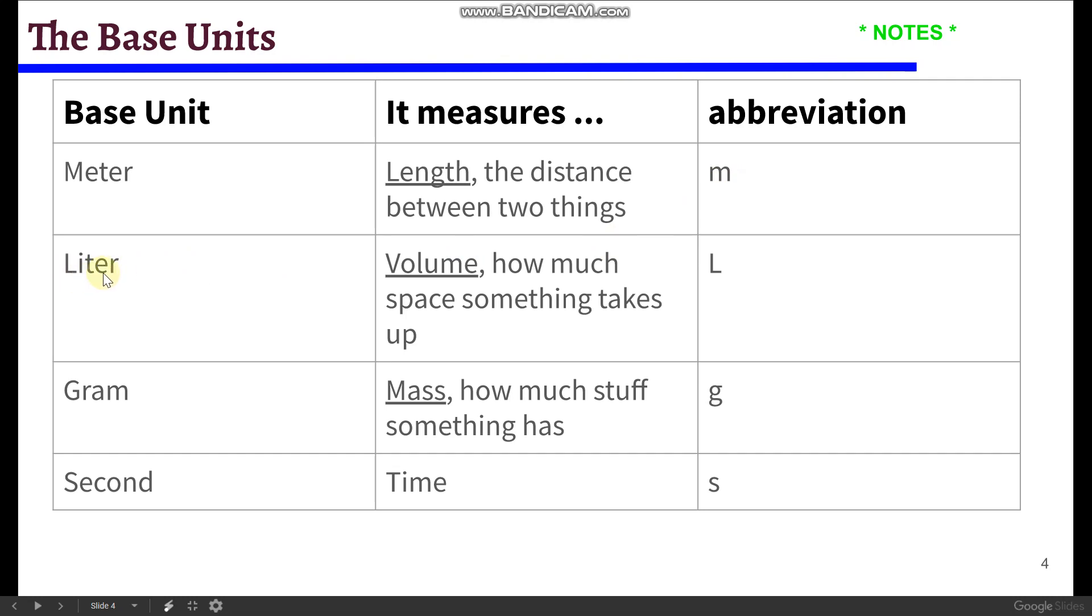Second unit is a liter. A liter is used to measure volume and how much space something takes up. A liter is abbreviated with a capital L. Next up is a gram. Gram is used to measure mass, how much stuff something has in it. And that's abbreviated with a lowercase g. Base unit for time is second. It measures time, right? So how long it takes for stuff to happen. And then the abbreviation is a lowercase s.